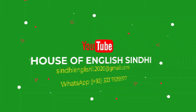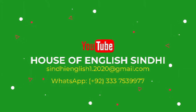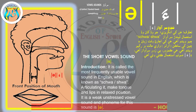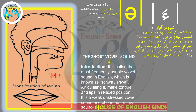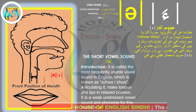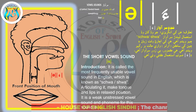It is called the most frequently usable vowel sound in English, which is known as Schwa. Articulating it, make the tongue and lips in a relaxed position. It is a weak, unstressed vowel sound and the phoneme for this sound is ə.